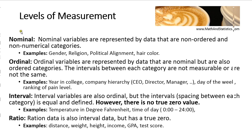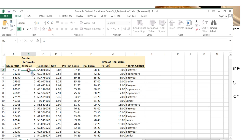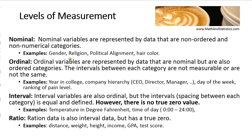Nominal data is data described essentially by names. It is qualitative, discrete, and has no order associated with it. It is non-numerical in nature, even if designated with numbers. For example, even if gender is designated numerically — where one is female and two is male — it's still nominal data. There's no order, and these numbers don't mean anything; they're just labels. You can't add them or compare them numerically. Religion, political alignment, and hair color are all nominal variables with no order associated with them.